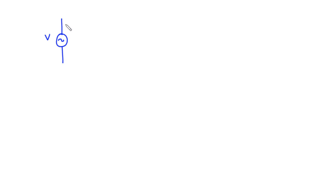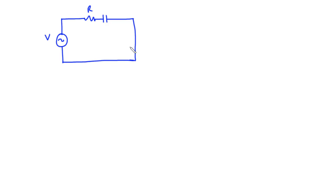A series RC circuit is a circuit in which the passive elements — the resistor and the capacitor — are connected in series with a supply voltage. We have the AC supply voltage, then the passive element which is the resistor, in series with the capacitor, and current I flowing through the circuit.